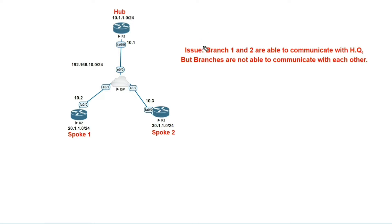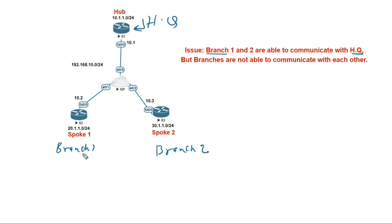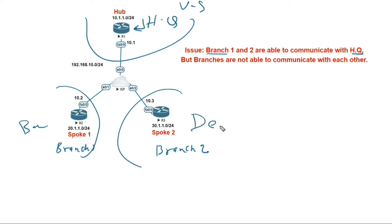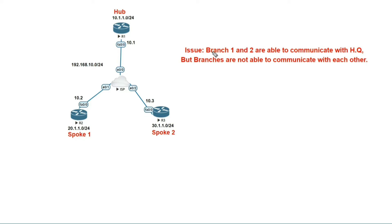The ticket issue is: branch one and two are able to communicate with headquarter. So here you can see this is my router one — my router one is the hub router, so this is my headquarter. This is spoke one, you can say this is branch one, and this is spoke two. So this is branch one, this is branch two, and this is headquarter.